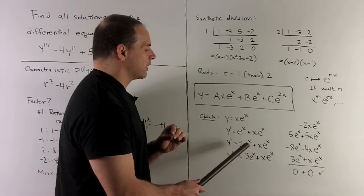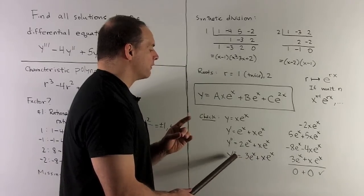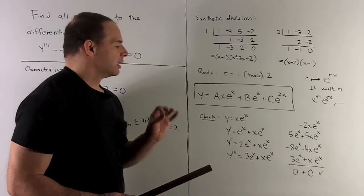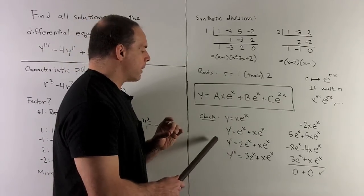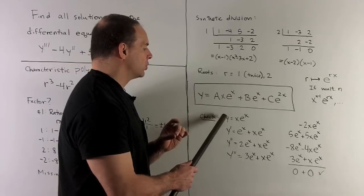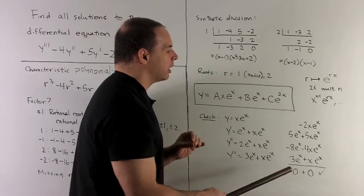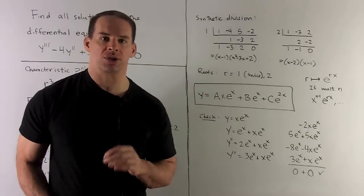Second derivative gives me 2 e to the x plus x e to the x. Then third derivative is 3 e to the x plus x e to the x. Now we just work our constants in. So we had y triple prime minus 4y double prime plus 5y prime minus 2y should give me zero. We do our bookkeeping over here, and you'll notice, you go down each column, you get a zero, so the check works.